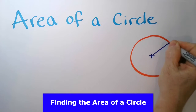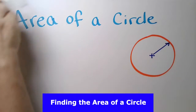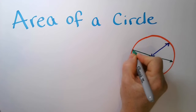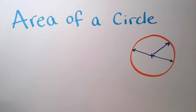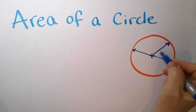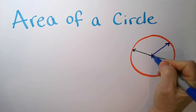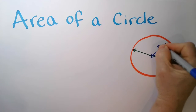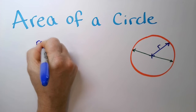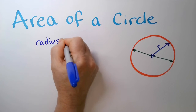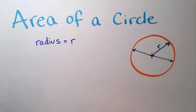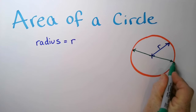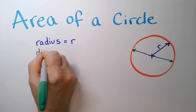To find the area of a circle, we have to define a couple of parts of the circle first. A circle is an object that has no corners, and this makes it really fun to work with. So if I take a measurement from the center of the circle to any point on the outside, that's called the radius.